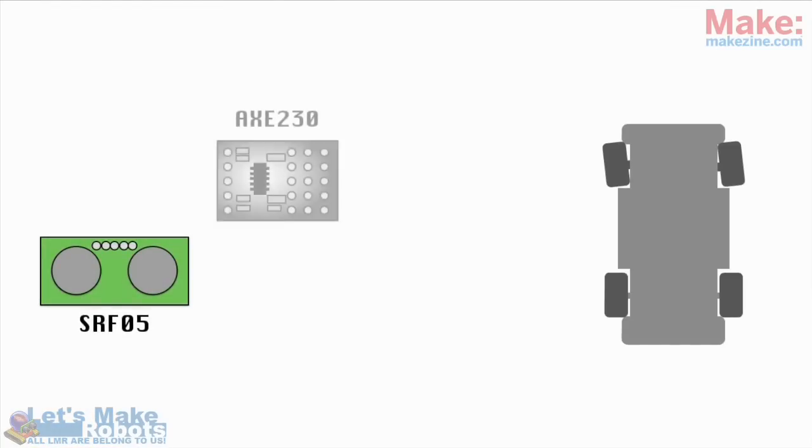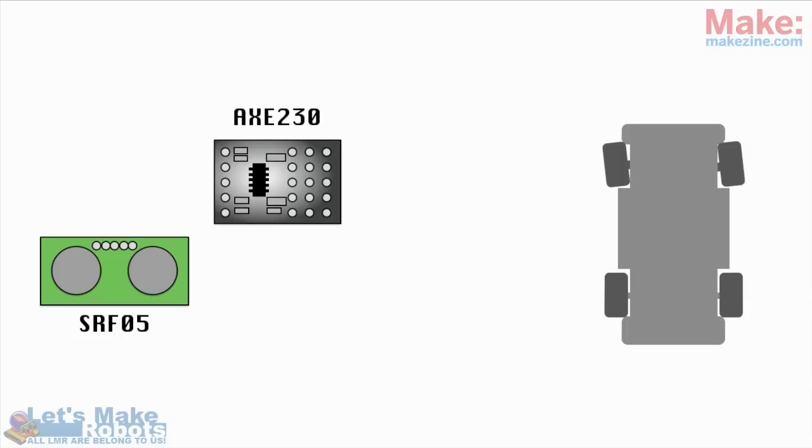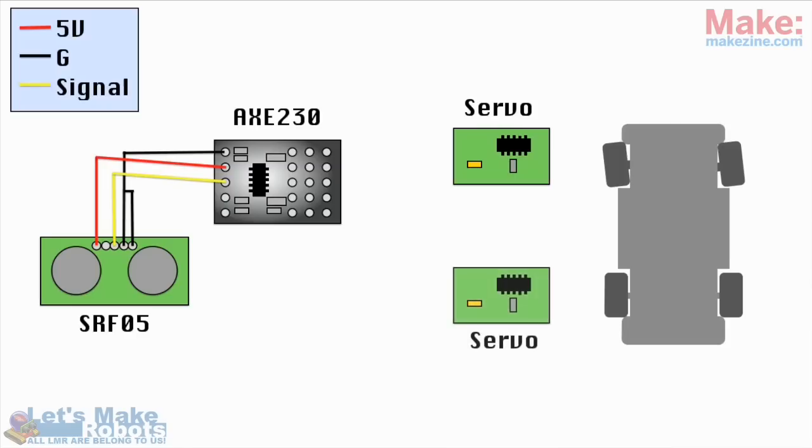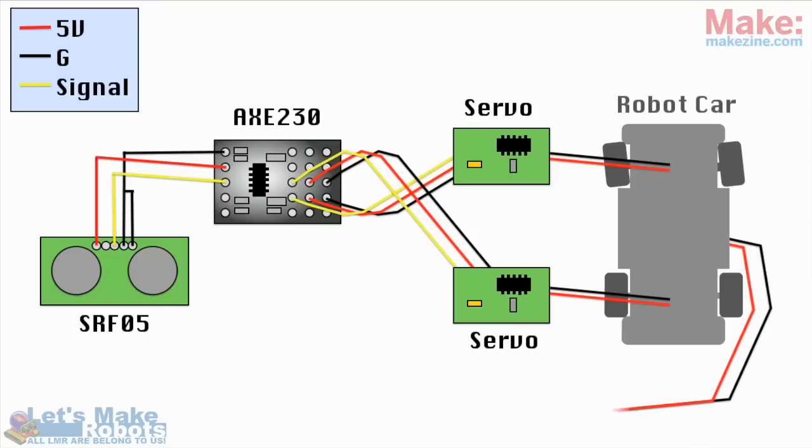Here's the drawing of the car, this is the SRF05, this is the AXE230, and this is how you connect the SRF05 to the AXE230. These boxes are supposed to illustrate the servo controllers, and you saw how I hooked them up already. So all you need to do after all this is done is to take the power from the car and plug it into the AXE230.